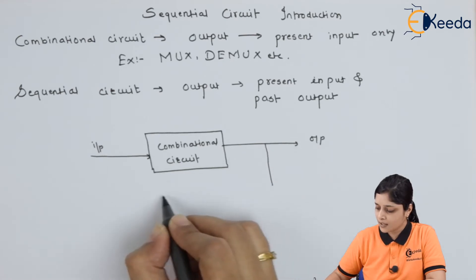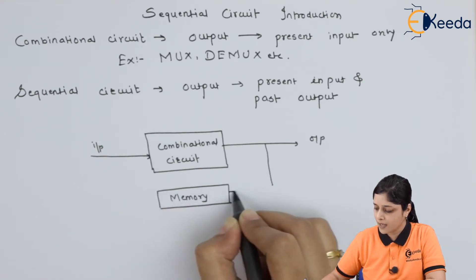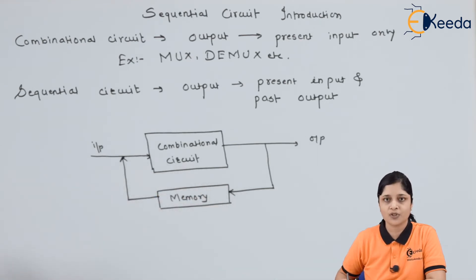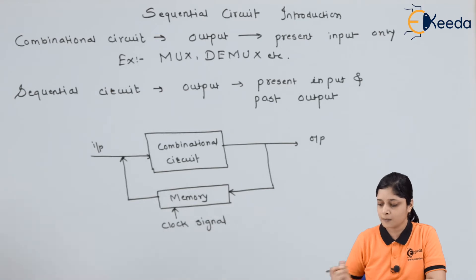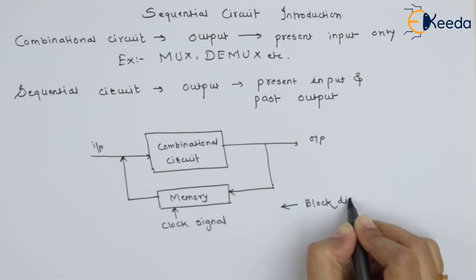In sequential circuit, memory element is added, that is, past output, you have to give to the feedback to the input side. And clock signal also, you have to attach. So, this is the block diagram for sequential circuit.